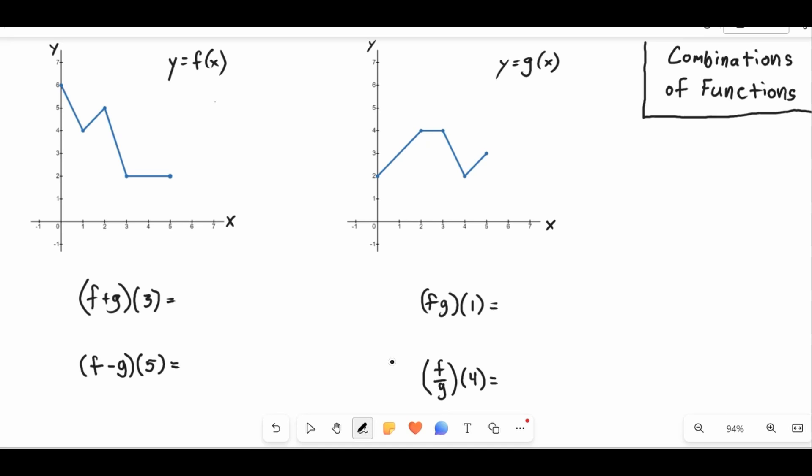In order to identify f plus g of 3, this is going to simply be f(3) plus g(3). And we already know this because in the previous lesson when we learned how to add two functions, f plus g of x is f(x) plus g(x). So now we just need to identify what is f(3) and what's g(3).